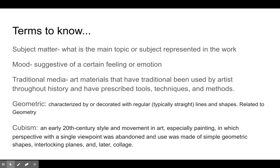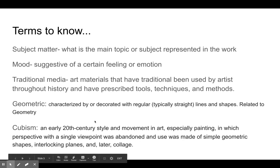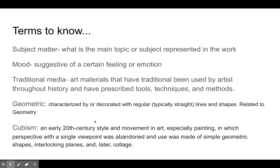Traditional media is art materials that are traditionally used by artists — typical things you would see an artist using. Geometric means shapes that have typically straight sides or lines to make them, and those are the shapes you usually see in geometry. The reason we're talking about geometric shapes is because those are the shapes that pretty much make up all of cubism art.